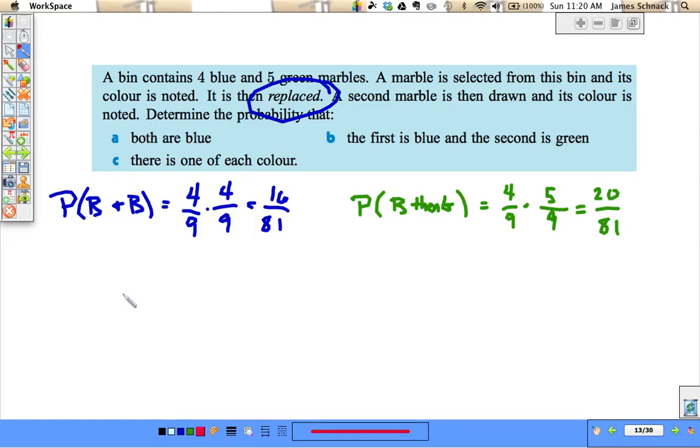Part C, one of each color. Probability blue then green. And you might be saying, well how does that differ from what we did in part B? There's one of each color there. Well, in this case it could come blue then green, or green then blue. There's two different possibilities, and that's why I changed my wording up here in part B.